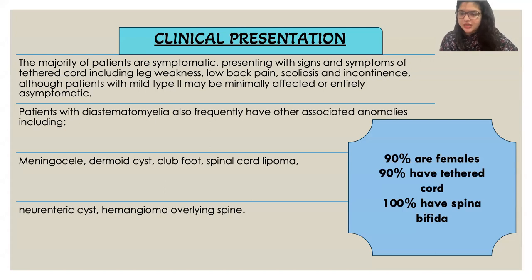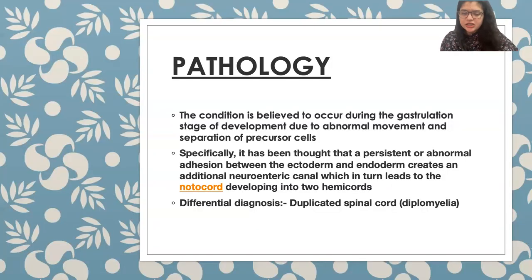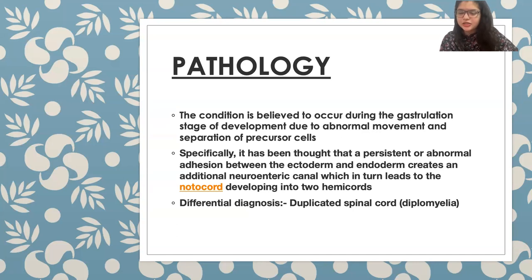They also have associated abnormalities like meningocele, dermoid cyst, club foot, spinal cord lipoma, and neuroenteric cyst. Ninety percent of patients are female, 90 percent have tethered cord, and 100 percent have spina bifida. The condition is believed to occur during the gastrulation stage of development due to abnormal movement and separation of precursor cells. A persistent abnormal connection between the ectoderm and endoderm creates an accessory neuroenteric canal, leading to the notochord developing into two hemichords.